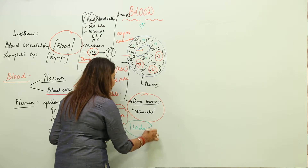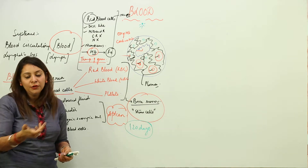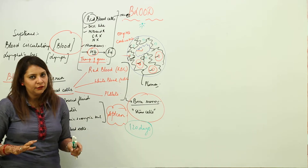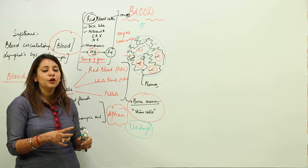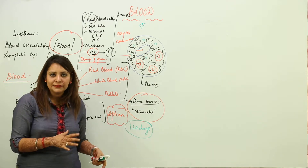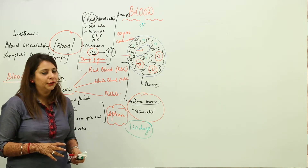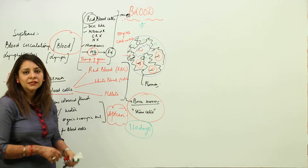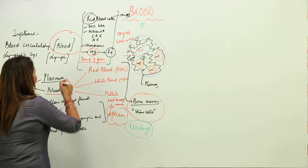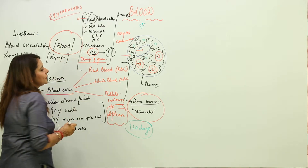The lifespan of RBCs is approximately 120 days. When you donate blood, the RBCs lost are not a concern because the rate of formation is actually ten times the rate of RBCs that die or are lost through donation. RBCs are formed in very large numbers in bone marrow from stem cells. Another name for RBCs is erythrocytes.